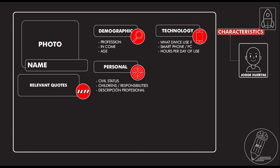In the personal section, it's very important to know their civil status — if they are married or single, if they have children, and what kind of responsibilities they have. It's also very important to make a description of all the tasks they do in a day, meaning what they do for a job. Being very specific is better for the development of this tool.